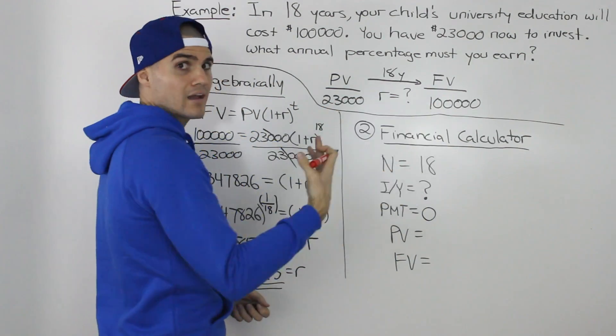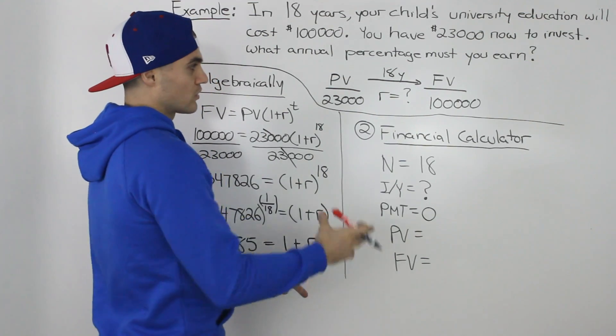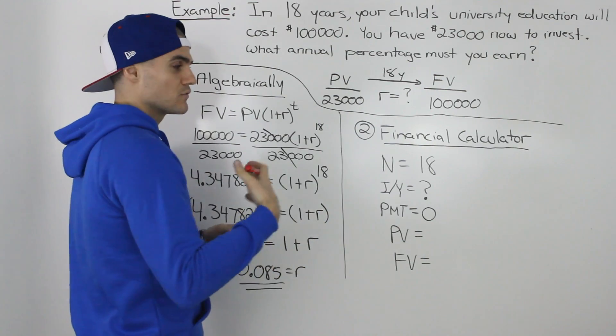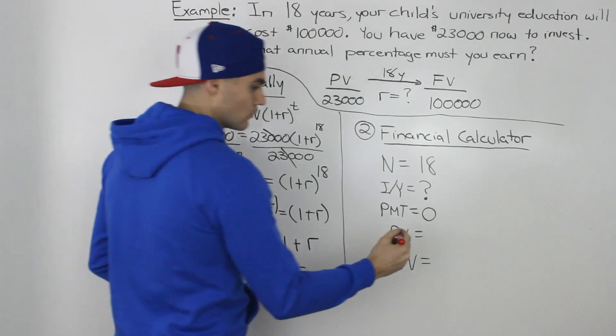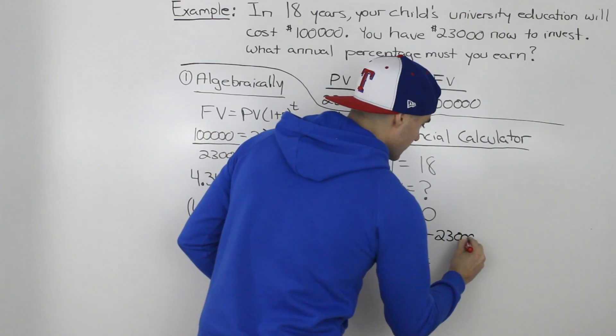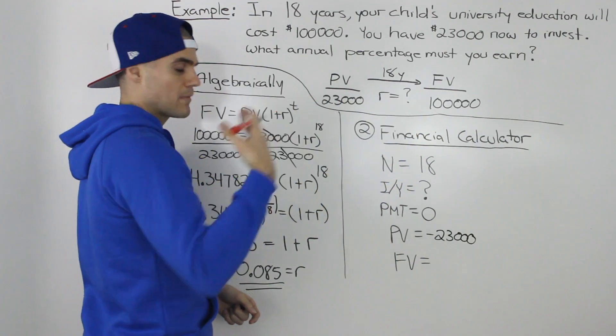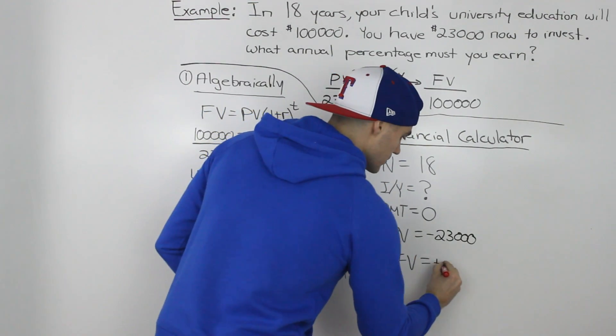We're just investing $23,000 and then we have to get back $100,000. The present value is what we're investing today. Since we're investing it, it's a cash outflow for us, so that's negative $23,000. The future value, we're getting that $100,000 back, so that would be positive.